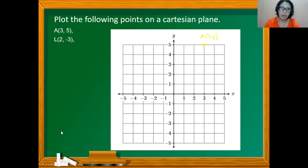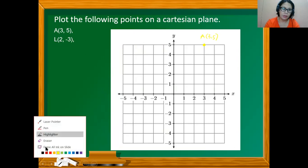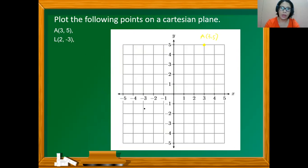Point L is at (2, -3). From the origin, we count 2 units to the right: 1, 2. Then we count 3 units down since the second element is negative 3: 1, 2, 3. So this point at (2, -3) is defined by point L.